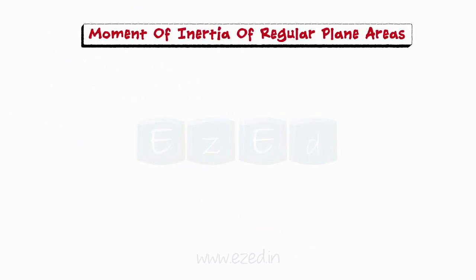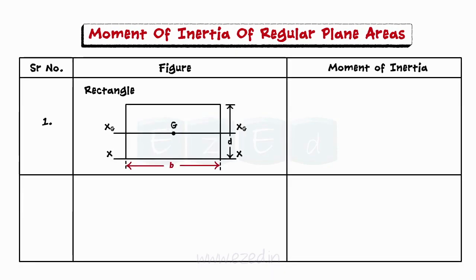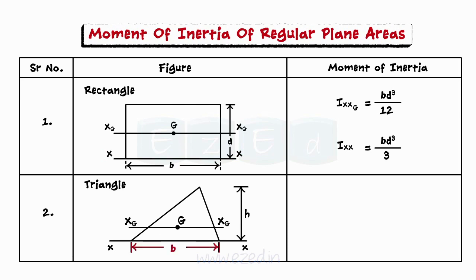The table given shows the moment of inertia of various regular plane areas. For a rectangle of base b and depth d with centroid at point G and centroidal axis xg-xg, the moment of inertia about the centroidal axis is bd³/12. Using the parallel axis theorem, the moment of inertia about an axis passing through the base is bd³/3. For a triangle with base b and height h, the moment of inertia about the centroidal axis is bh³/36, and using the parallel axis theorem, about the base it is bh³/12.